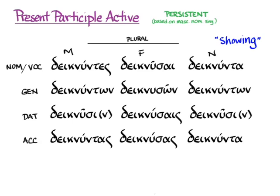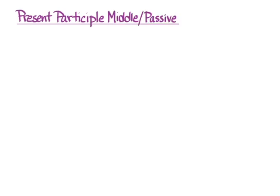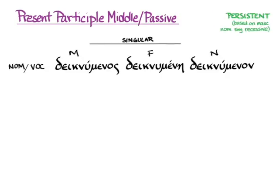For the present middle/passive participle, using the standard -menos, -menē, -menon suffix on the short-grade stem: deiknumenos, deiknumenē, deiknumenon — with persistent accent based on the masculine nominative singular. This means 'being shown' in the passive, or 'causing to be shown' in the middle.